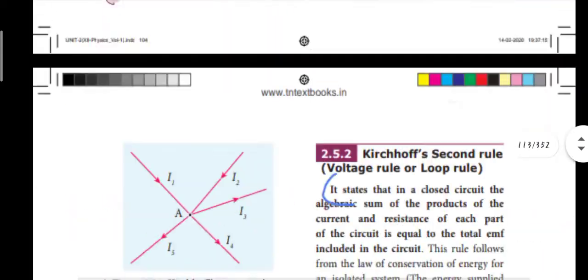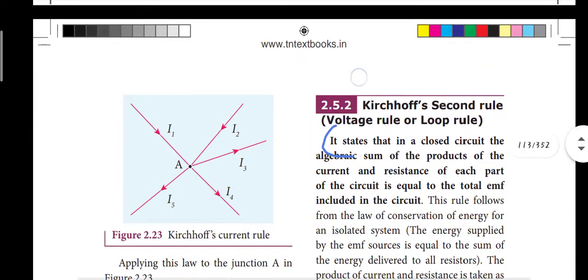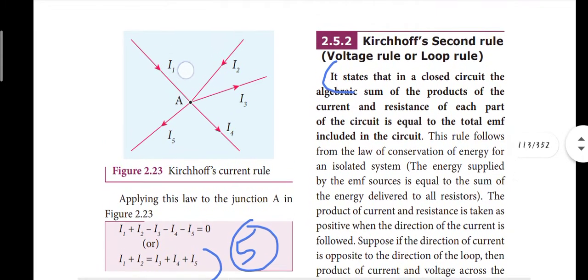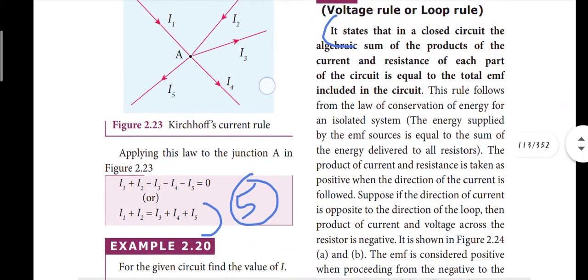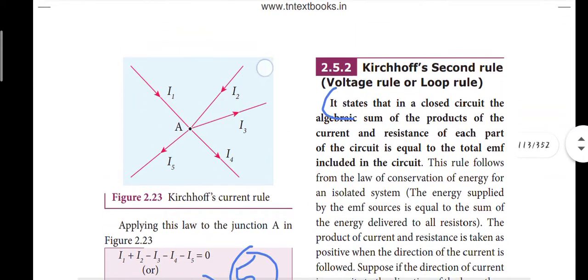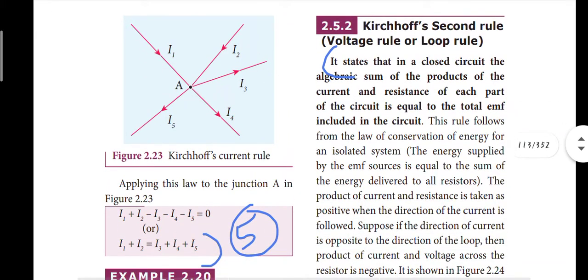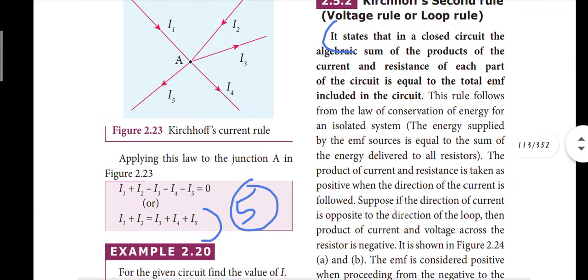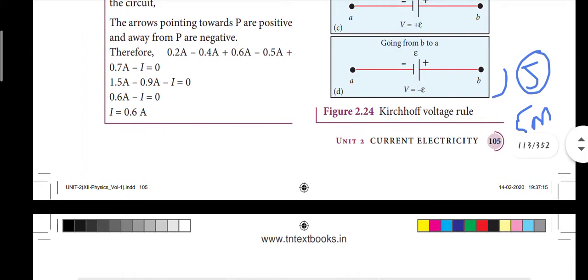Fifth question: Kirchhoff's first rule. The diagram explains rule one. This is easy. The point is here, this line is here. At the point, minus I1 and I2, at the point I1 and I2 plus I5 and I3. The first rule: if current enters a junction it is positive, if it leaves the junction it is negative. If we have a second rule, this is the theory you can see. This is the fifth 5-mark question.